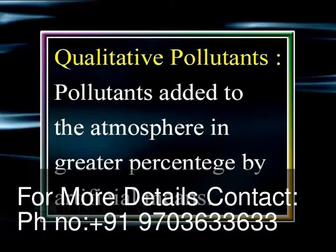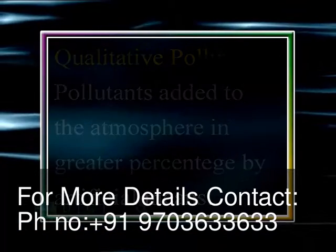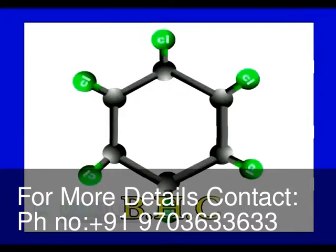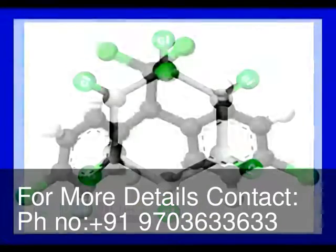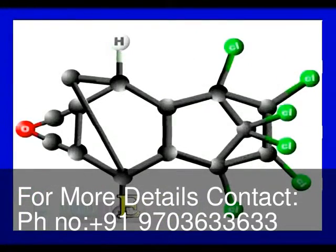Qualitative pollutants are those added to the atmosphere in a greater percentage by artificial means. Examples include pesticides like BHC, DDT, endrine, etc.